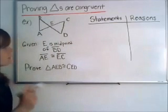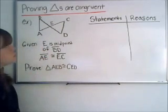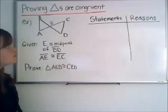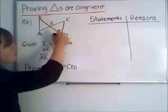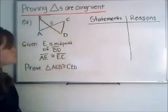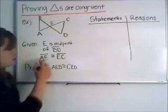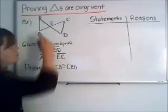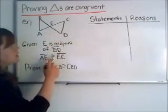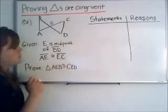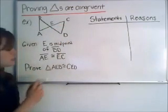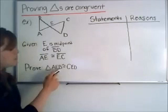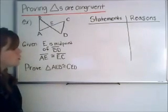And what we are given is that the first point is that E is the midpoint of the segment BD, which runs from here to there. We are also given that the line segment AE is congruent to line segment EC. And what we would like to prove is that triangle AEB is congruent to triangle CED.